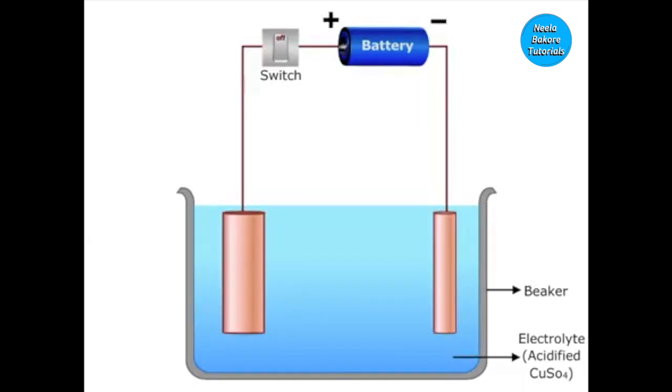The anode is a thick rod made up of impure copper. The cathode is made up of pure copper and is taken in the form of a thin rod. When current passes, copper sulfate (the electrolyte) dissociates into copper ions and sulfate ions.